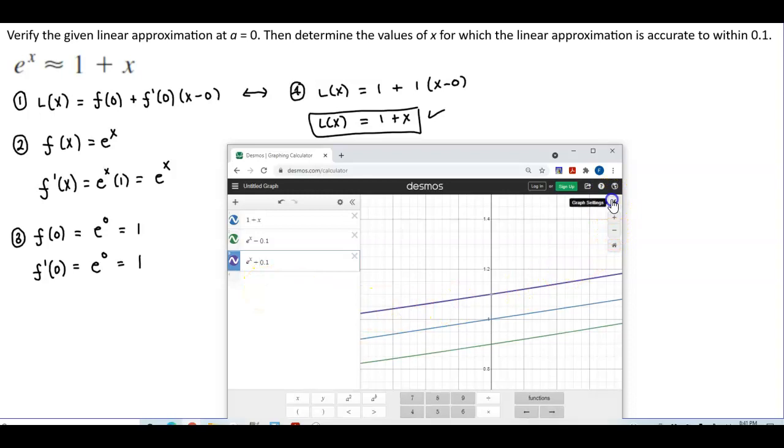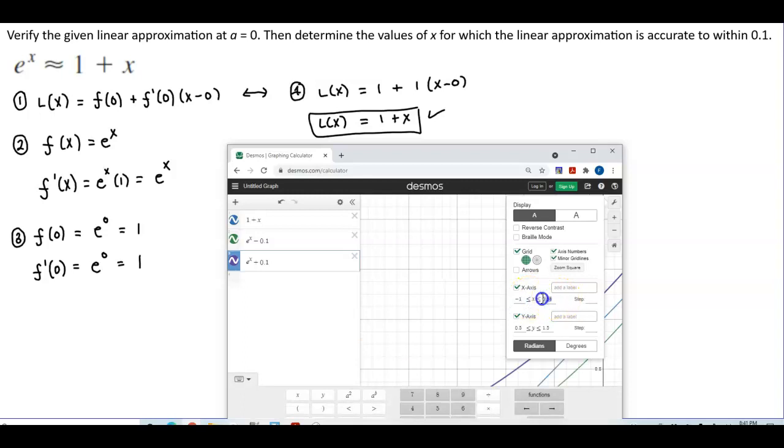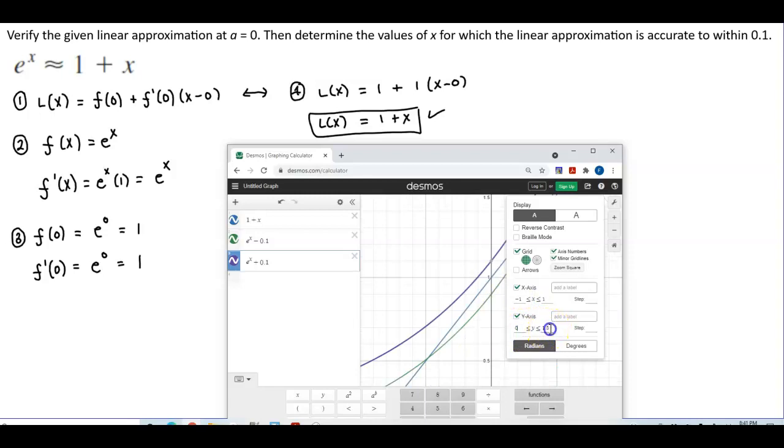So let's take a look at our viewing rectangles. So I'm going to go from negative 1 to 1, and for the y value, we'll go from 0 to 2.